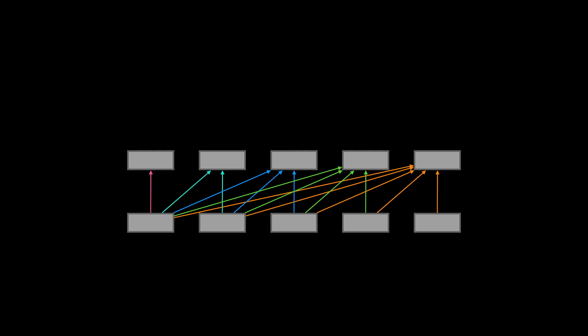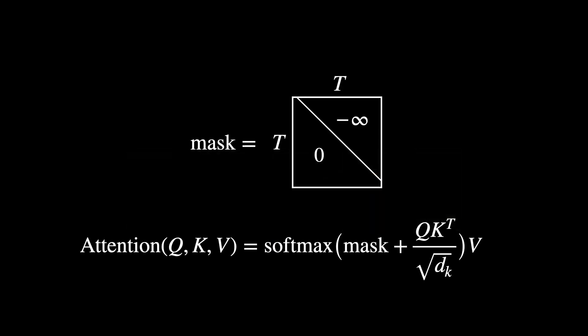In each of the masked attention layers during training, when we update the representation at a given position, it should pay zero attention to any of the later sequence positions. The mask is simply an upper triangular matrix, with negative infinities above the main diagonal and zeros everywhere else. It's added to the result of the query-key multiplication before the softmax. Any position with a negative infinity in the mask will result in a zero after the softmax, placing zero weight on the corresponding value vector.